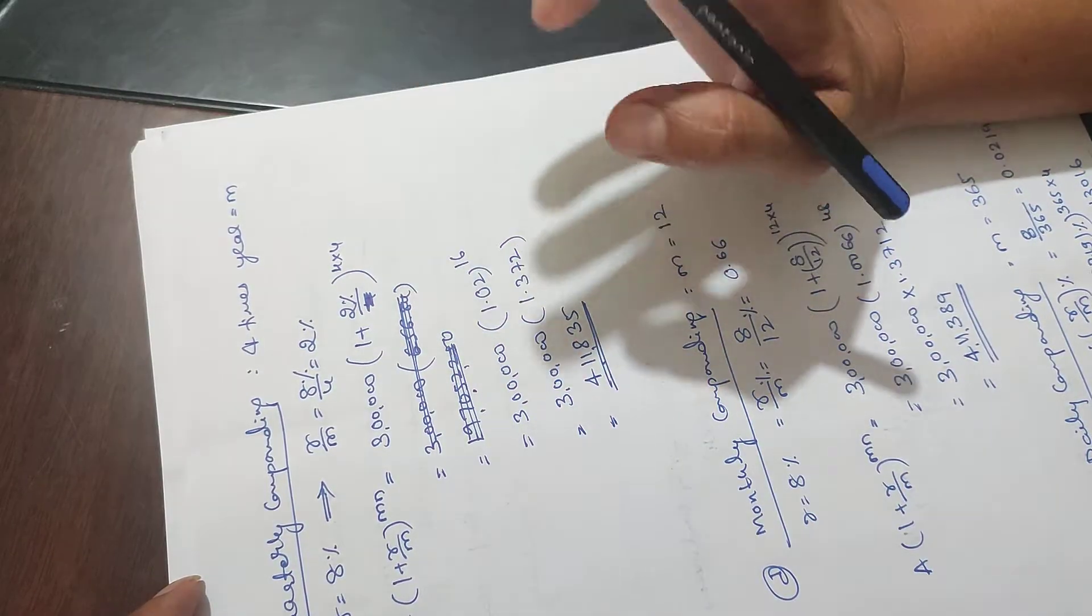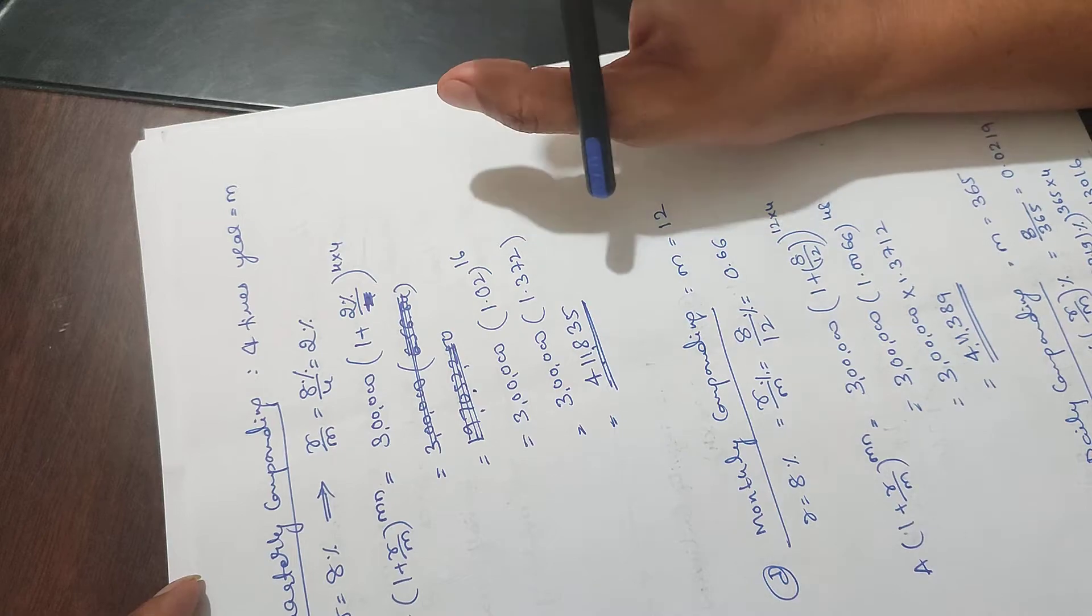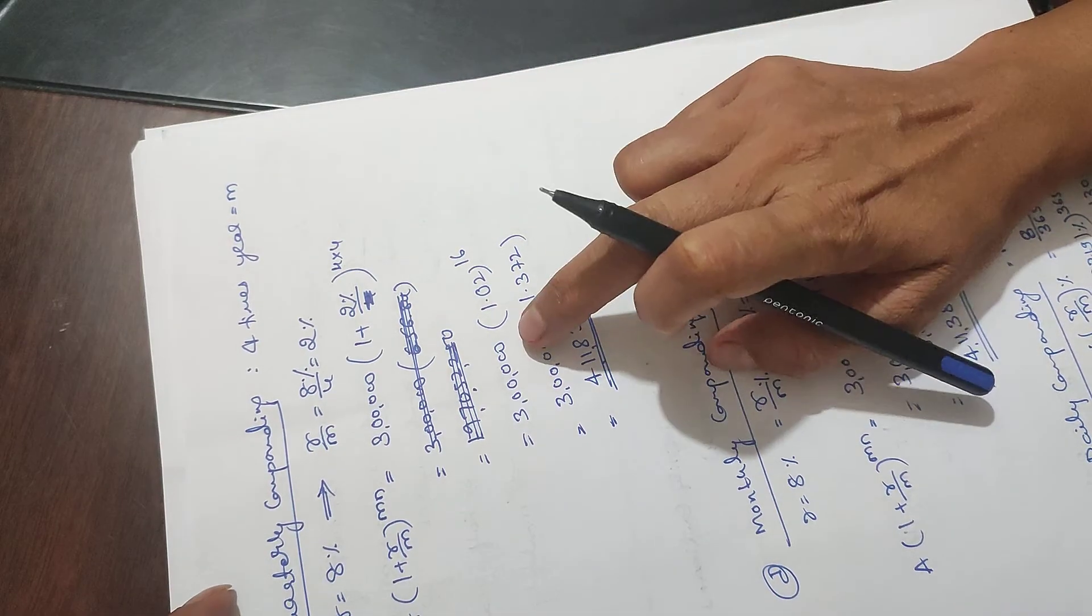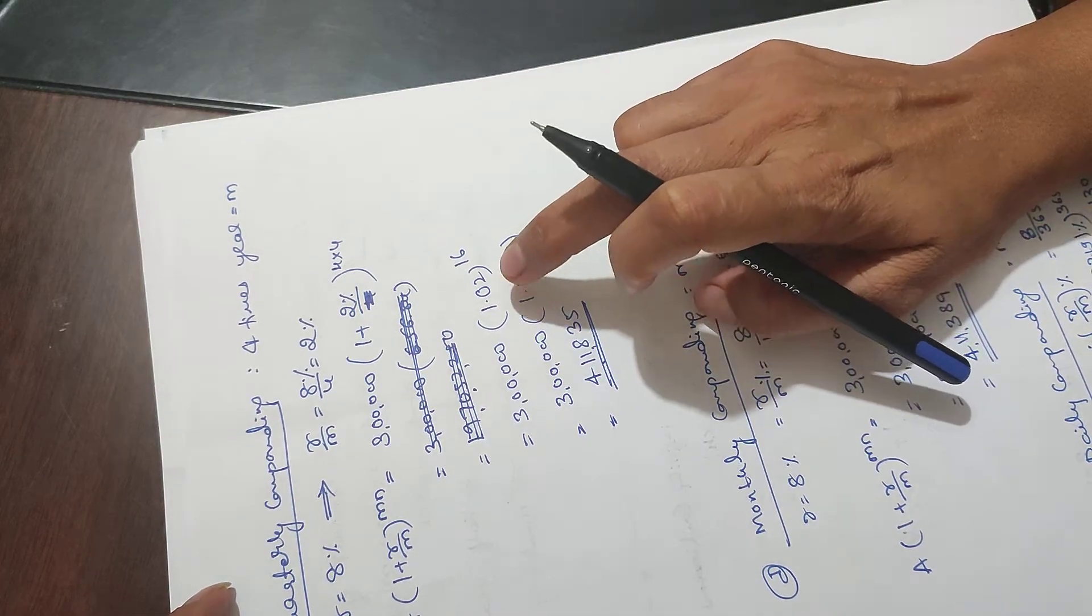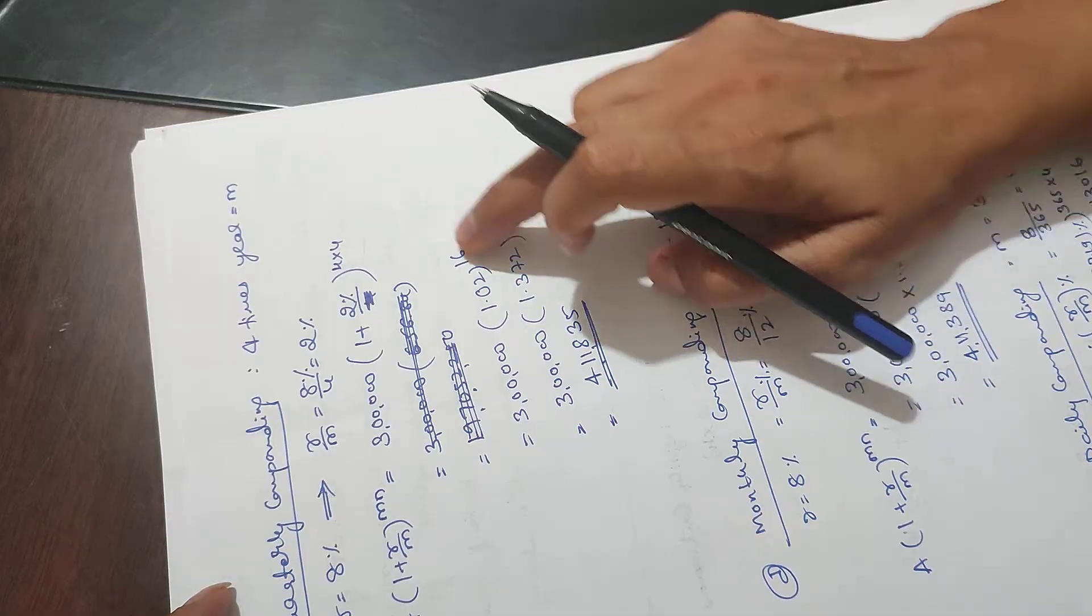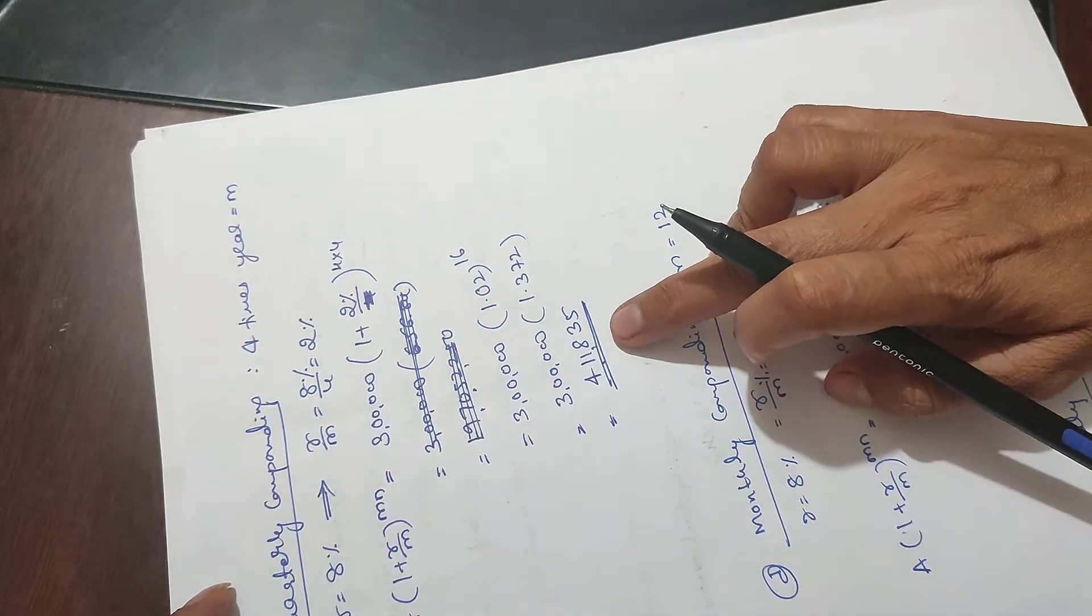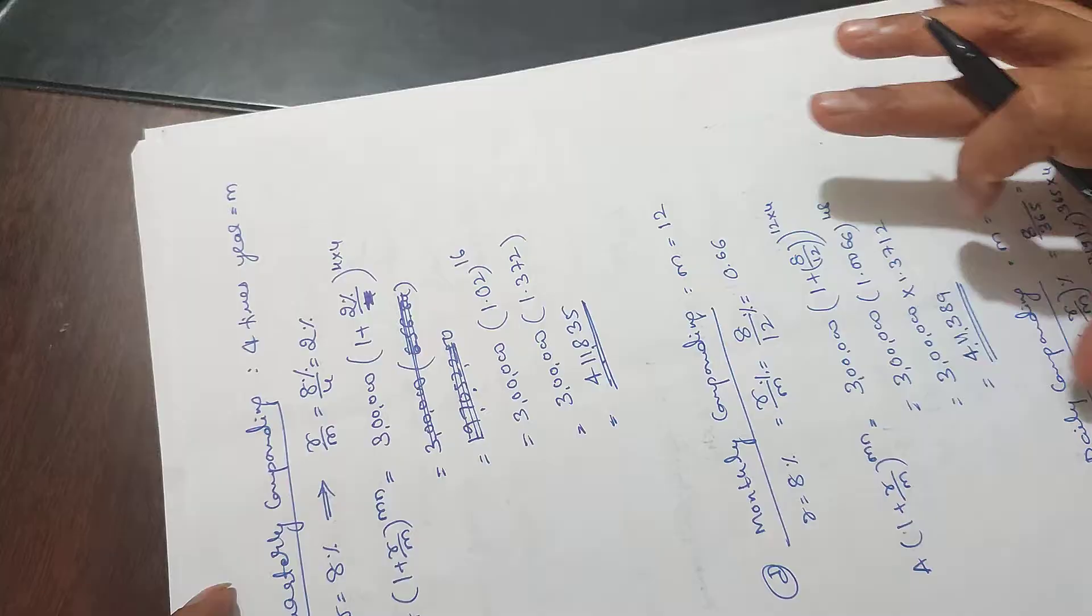Don't get confused - divide 8 by 4, not by 2. Be careful in exams to stay cool. 3 lakh in bracket 1.02 raised to 16 (4 times 4), which equals 4 lakh 11,835.